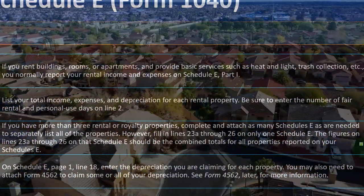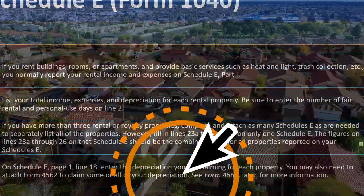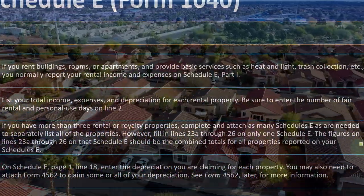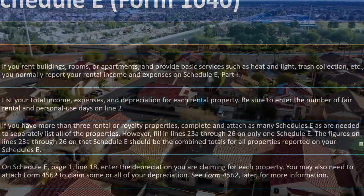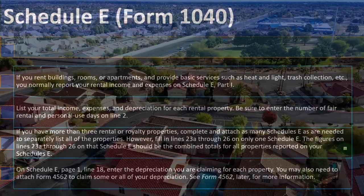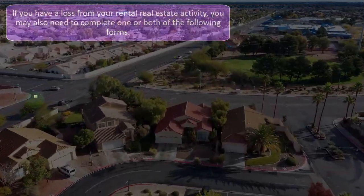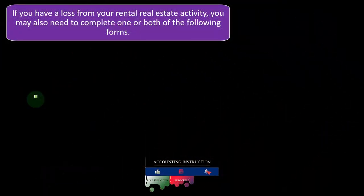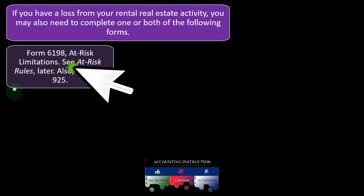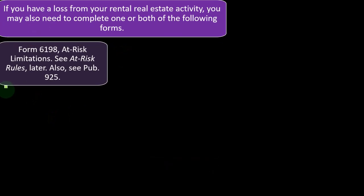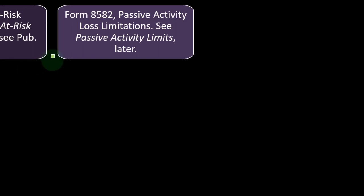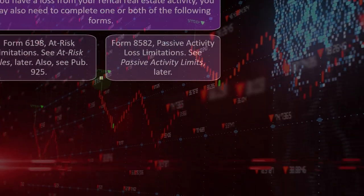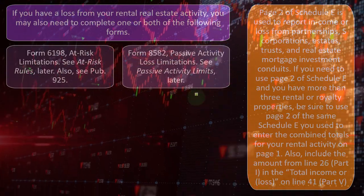On Schedule E, page 1, line 18, enter the depreciation you are claiming for each property. You may also need to attach Form 4562 to claim some or all of your depreciation. If you have a loss from your rental real estate activity, you may also need to complete Form 6198 for at-risk limitations, and Form 8582 for passive activity loss limitations. We'll get into those in the next presentation.